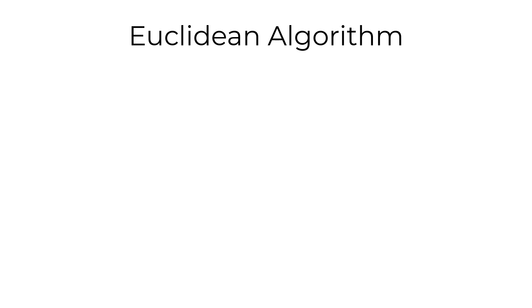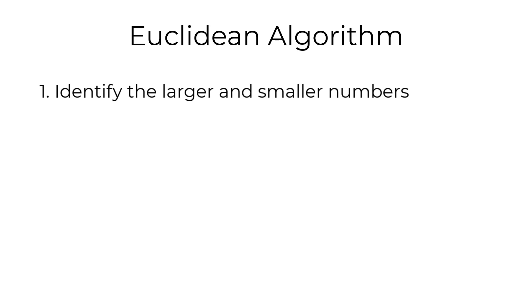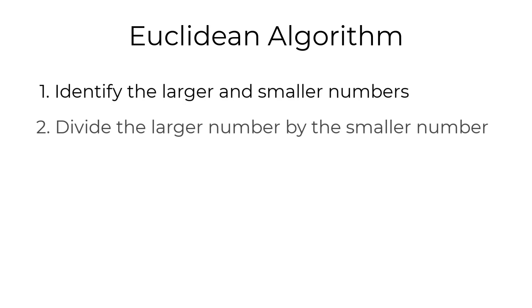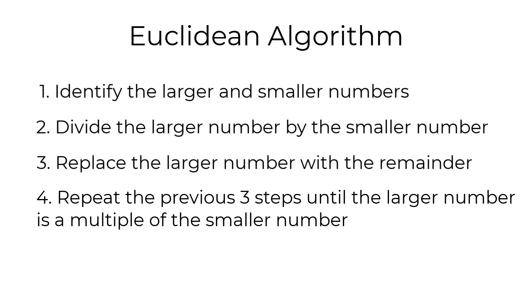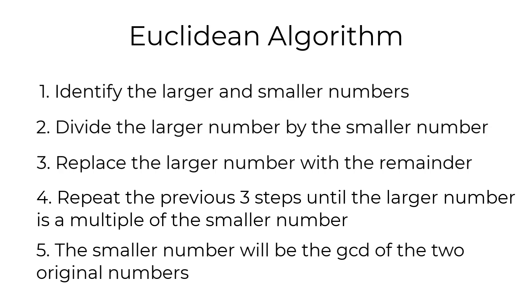Now let's review what we learned. The Euclidean Algorithm is used to find the greatest common divisor of two numbers. The first step is to identify the larger and smaller numbers. The second step is to divide the larger number by the smaller number. Third, we replace the larger number with our remainder. Then we repeat this 3-step process until the larger number is a multiple of the smaller number. Finally, once the larger number is a multiple of the smaller number, the smaller number will be the GCD of our two original numbers.